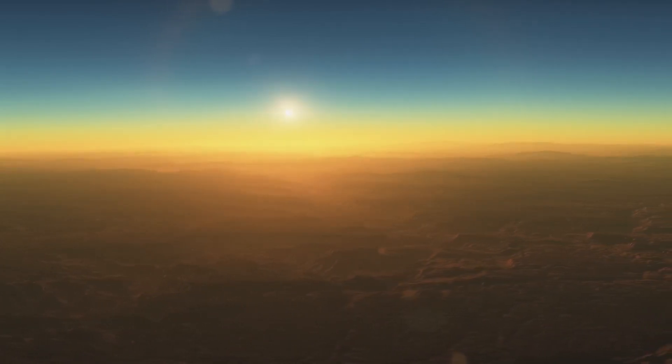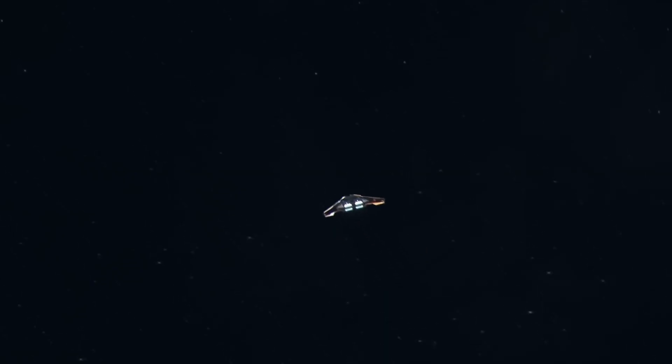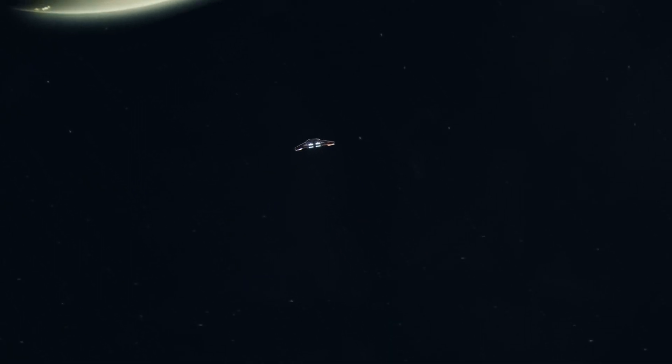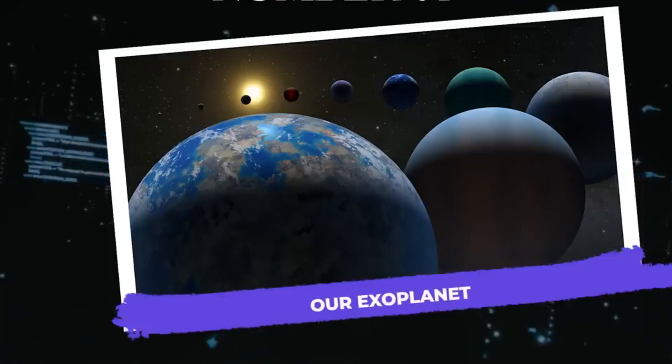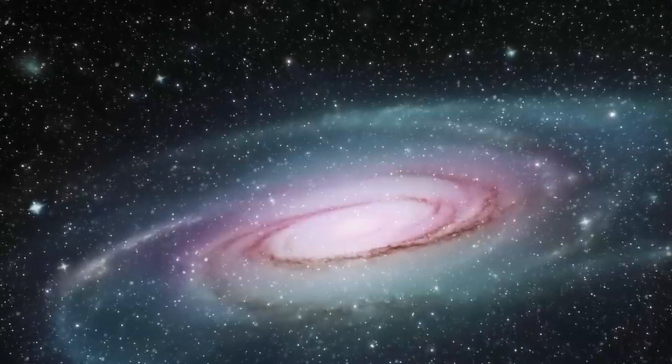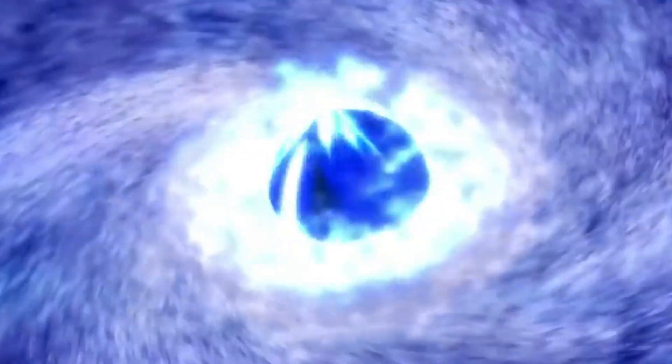Although Proxima b is much closer to its star than the Earth is to the Sun, it's capable of supporting organic life. The star Proxima Centauri is a small red dwarf star and therefore much cooler than our Sun. Proxima b may have conditions that are so similar to those on Earth that this planet can be described as a so-called super-Earth.